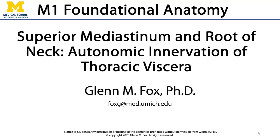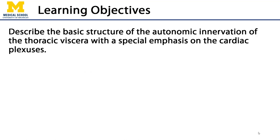Let's talk about the autonomic innervation of thoracic viscera. In this video we'll discuss the basic structure of autonomic innervation to the thoracic viscera — heart, lungs, and esophagus — with a special emphasis on the cardiac plexuses.